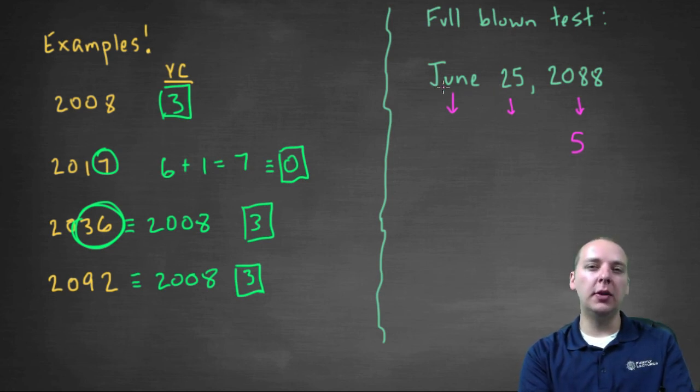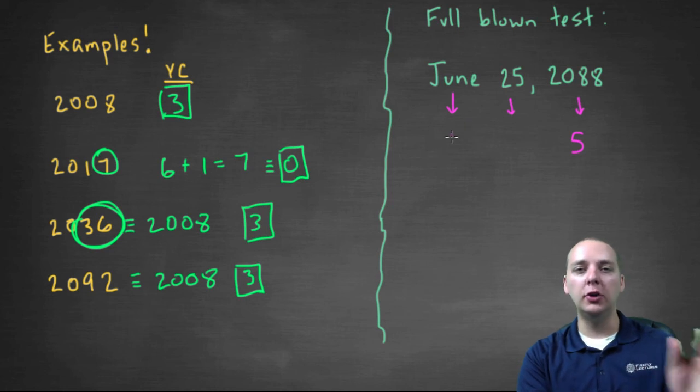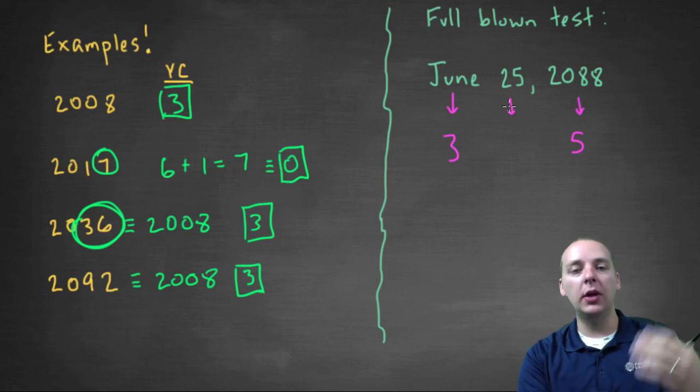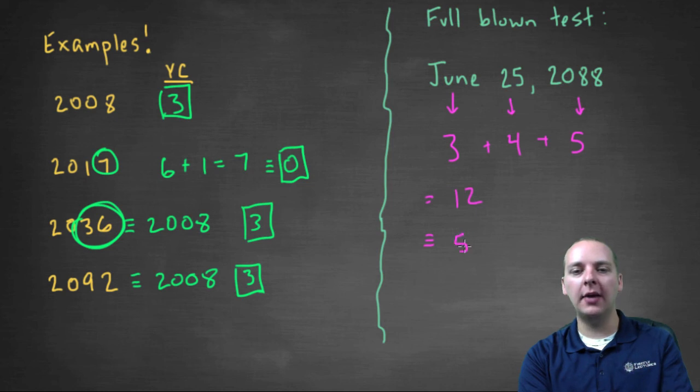June twenty-fifth, June's month code is three, remember our mnemonic June bug from the earlier video, bug has three letters. The twenty-fifth, so you take out multiples of seven on a calendar, every seven days you wind up back on the same day of the week anyways. So subtract out twenty-one, which is a multiple of seven, you get four. Add these up, three and four make seven, seven and five make twelve, modulo seven, cause you can take this down, modulo seven, will give you five, and five was on a Friday. So you can test me on this, but I think June twenty-fifth, two thousand eighty-eight in the future will be on a Friday.